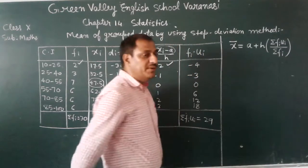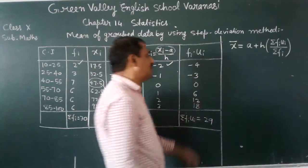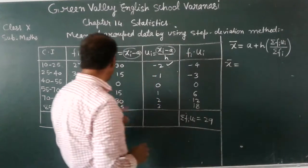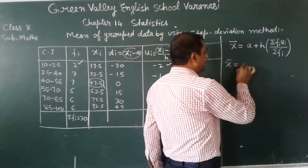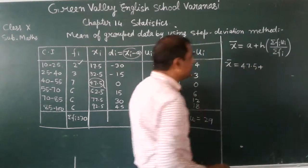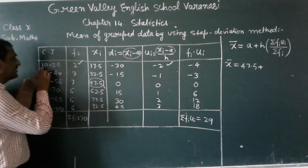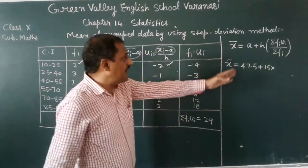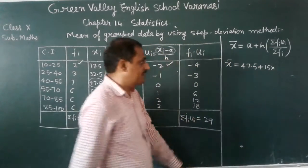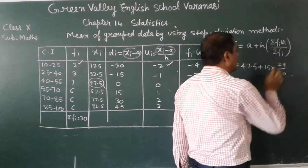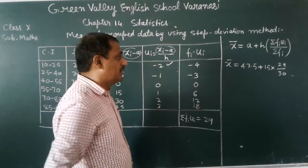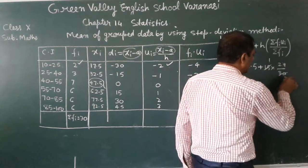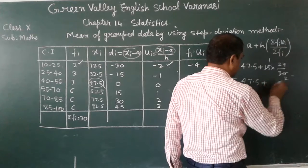Now I am going to find the mean of this given observations. Here this is the formula for finding the mean of the grouped data by using step deviation method. Here x bar is equal to A. Here A is what? A is the assumed mean. This is the A, 47.5 plus h. h is what? h is the class size, 25 minus 10. Here the class size is 15. So in place of h we will write 15, 15 multiplied by summation of fi ui. Here summation of fi ui is 29, 29 upon 30, because the value of fi, summation of fi is 30. Now we are going to simplify this form. 47.5 plus, this will become...